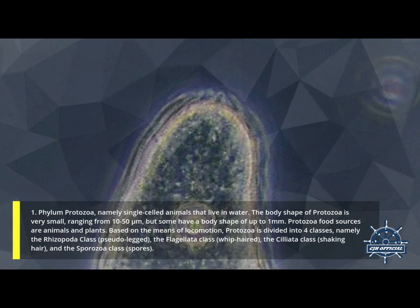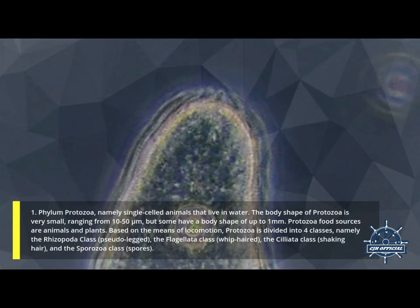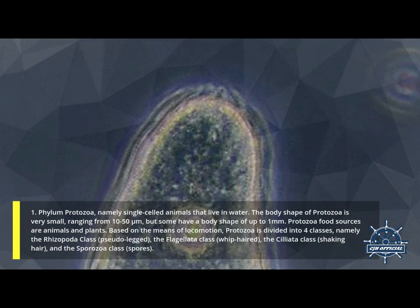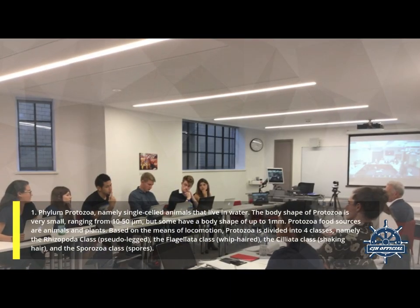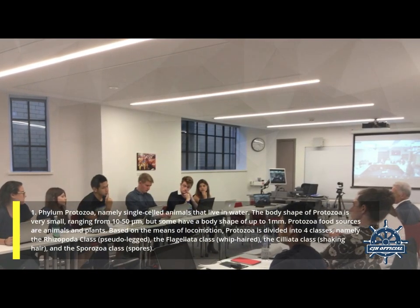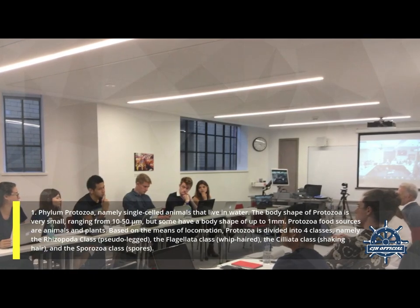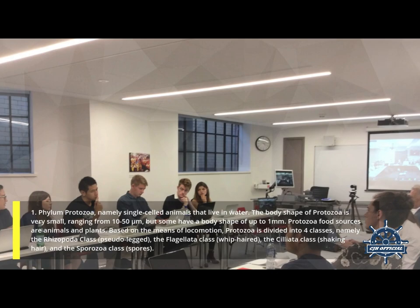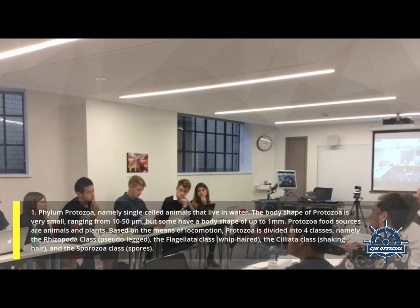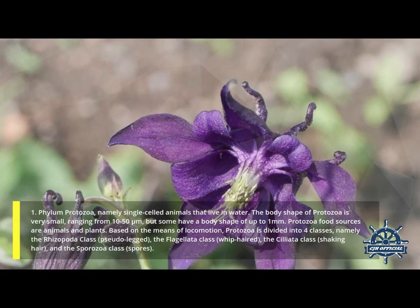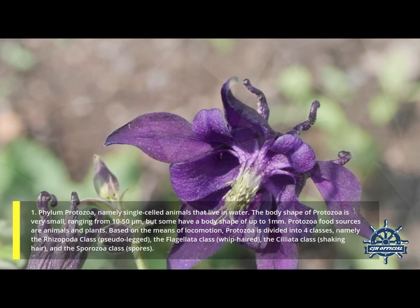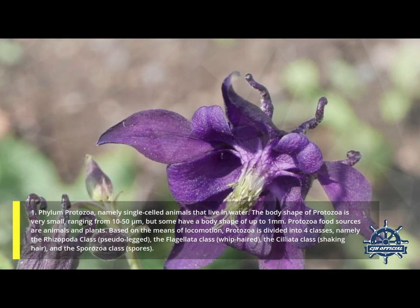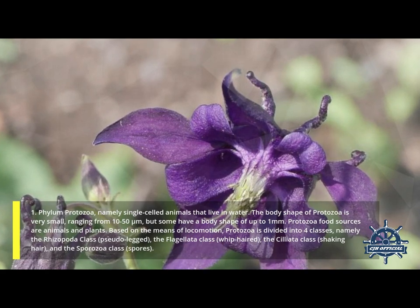First, Phylum Protozoa — single-celled animals that live in water. The body shape of protozoa is very small, ranging from 10 to 50 micrometers, though some have a body size of up to 1 mm. Protozoa's food sources are animals and plants. Based on their means of locomotion, protozoa are divided into four classes: Rhizopoda, Flagellata, Ciliata, and Sporozoa.